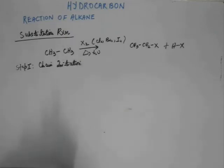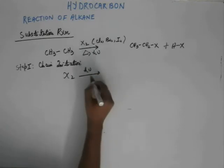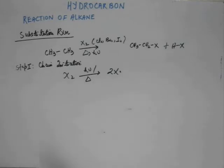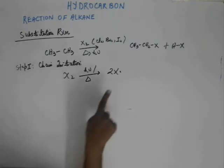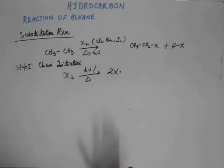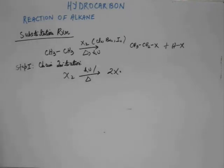This is chain initiation — the first reaction. When you provide heat or light, the X₂ bond breaks to create two X• (halogen free radicals). This is step one. We don't have to provide heat or light continuously throughout the reaction; we just have to initiate the system. Later on, the reaction will be self-perpetuating.